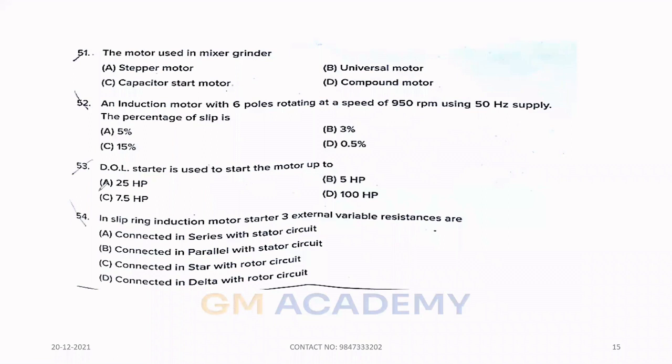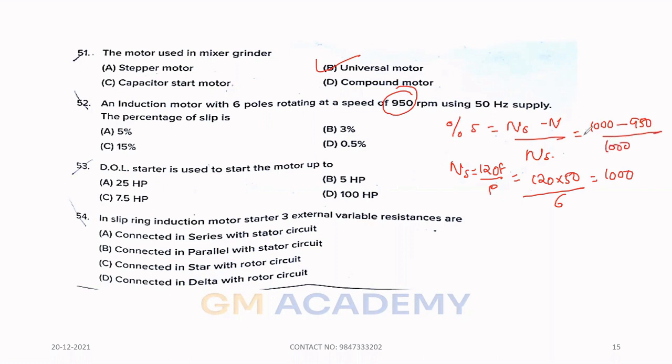Fifty-one. The motor used in mixer grinder. Option B, universal motor. Fifty-two. An induction motor with six poles rotating at a speed of 950 rpm using 50 hertz supply. The percentage of slip. Percentage slip is ns minus n divided by ns. Ns equals 120f by p. Synchronous speed equals 1000 rpm. So, the equation is 1000 minus 950 divided by 1000. Option A, 5 percentage is the correct answer.